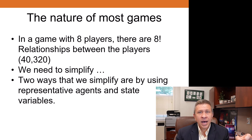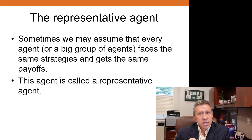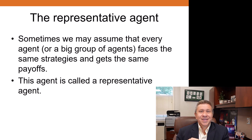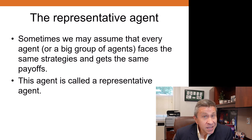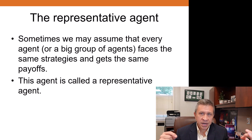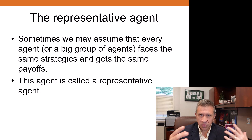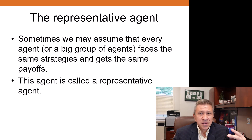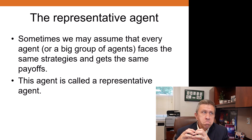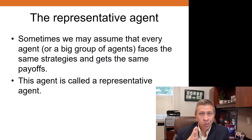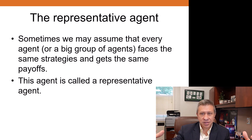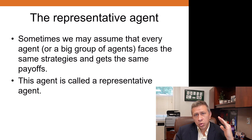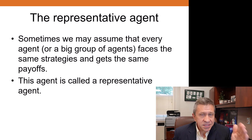What do we mean by representative agents and state variables? The representative agent is a case where we assume that every single player in the game, or agent, faces the same strategies and gets the same payoffs. This is somebody who's representative. We could extend to say there are a couple of different representative agents with slightly different incentives, payoff structures, and preferences, but for this class we're going to assume a representative agent that has a particular set of preferences — everybody has the same set.